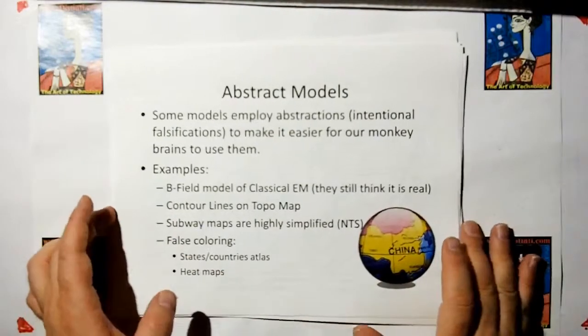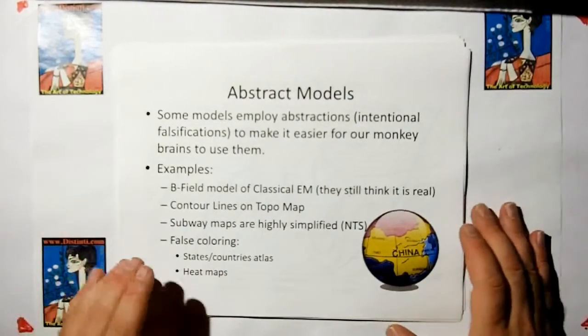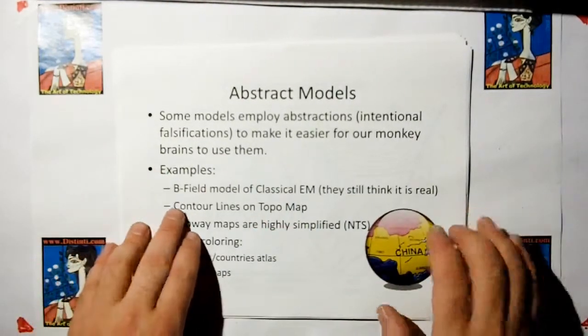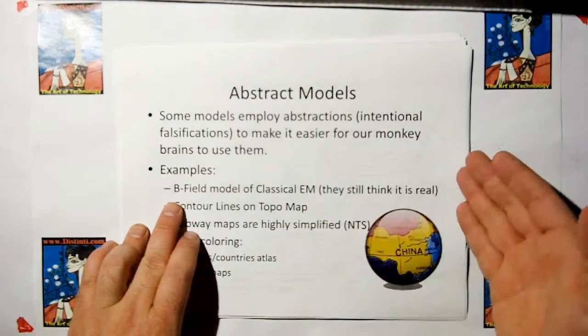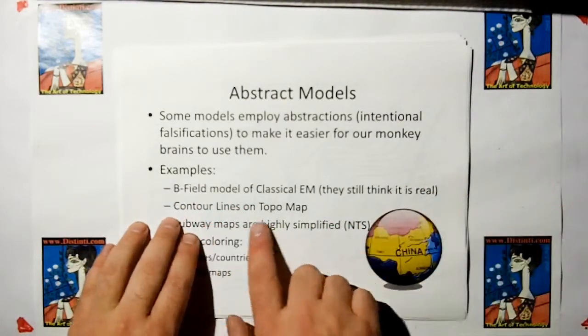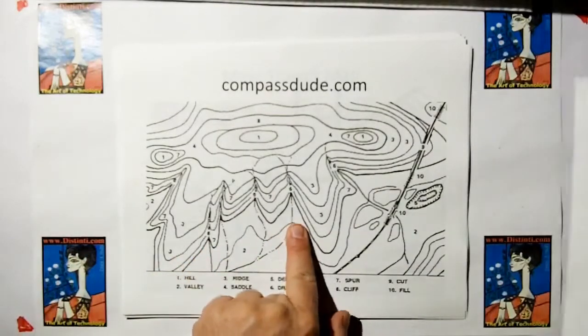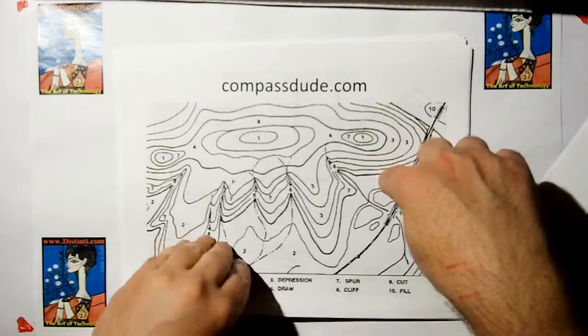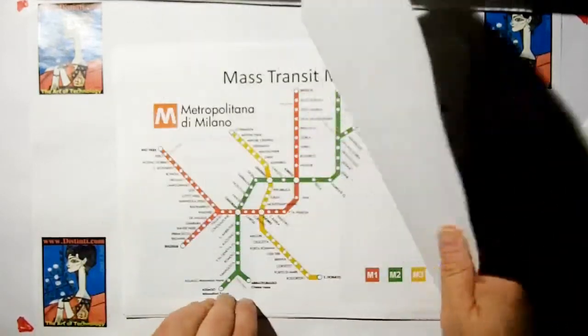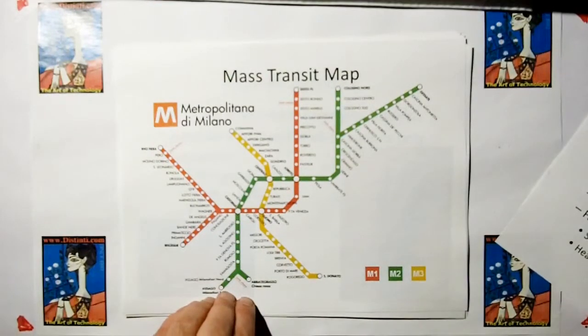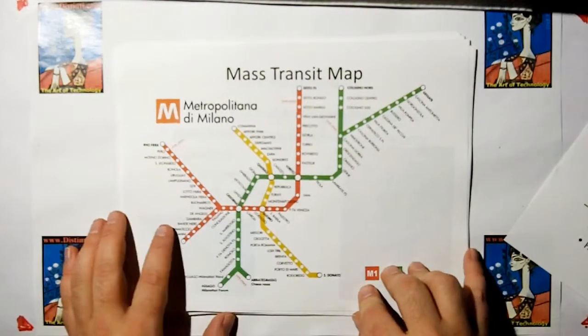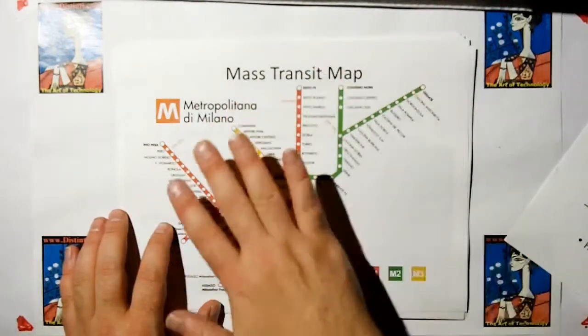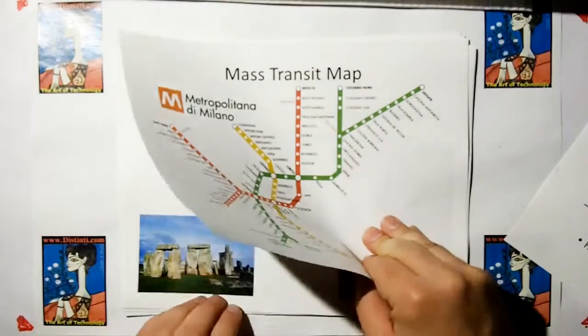Then we have abstract models. An abstract model is an intentional falsification to make it easier for our monkey brains to use them. For example, the B-field model, classical theory, is just an abstraction. The contour lines on a topographical map, that's just an abstraction. You can't go out in your backyard and dig up the 200 contour line at 200 feet above sea level. A mass transit system is another form of abstract model.